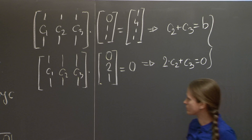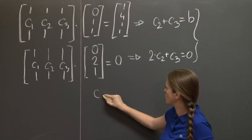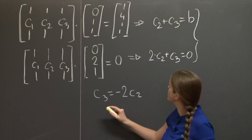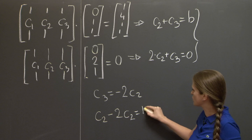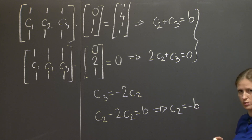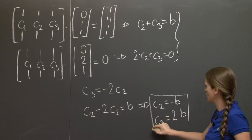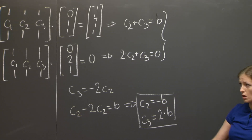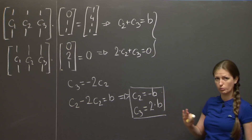Solving this system — where the unknowns are vectors, but it's still just a linear system — we can see from the second equation that C3 equals minus 2 times C2. Plugging back into the first equation gives C2 minus 2C2 equals B, from which it follows that C2 equals minus B, and C3 equals 2 times B. So from this small amount of information, we got the second and third columns of A completely explicitly.